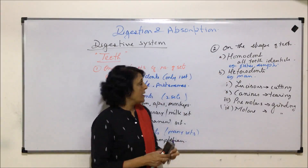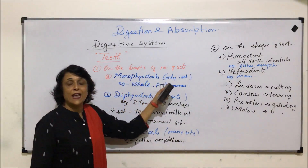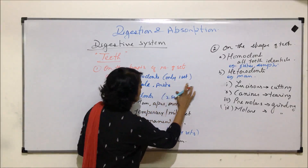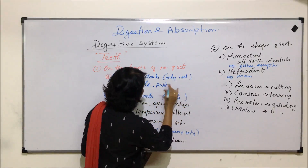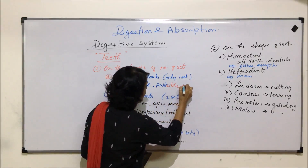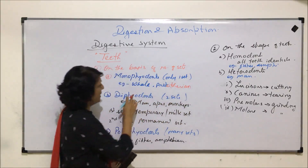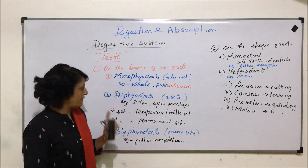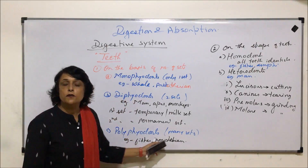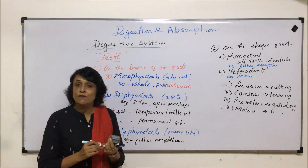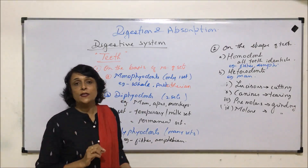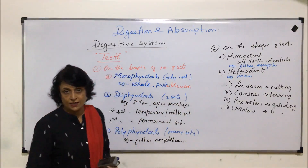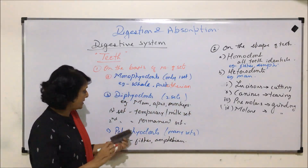So we have seen two classifications: one on the basis of sets and the second on the basis of shape. For sets: whales and prototherians are monophyodont, human beings are diphyodont, and fishes and amphibians are polyphyodont. Now we will talk about the dental formula using these classifications, in the case of human beings.